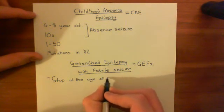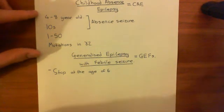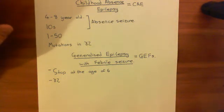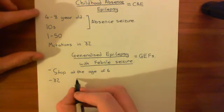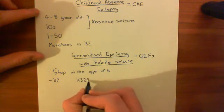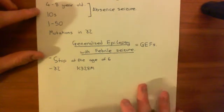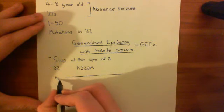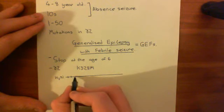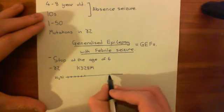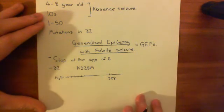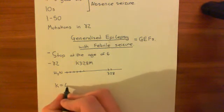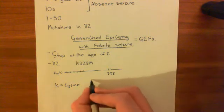What happens in generalized epilepsy with febrile seizures is you have a mutation in the gamma-2 subunit. There is a specific mutation that has been well characterized in this case: the K328M mutation. This tells you exactly what this mutation is. If we look at the gamma-2 polypeptide, you can count the amino acids up to the 328th position. This should be K — K is the single letter amino acid code for lysine. Let me show you the structure of lysine so you can appreciate what a big mutation this is.